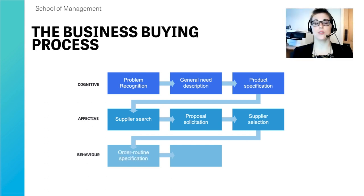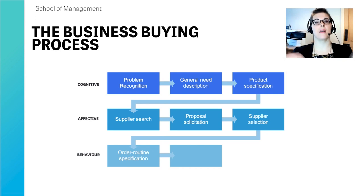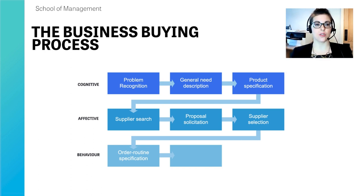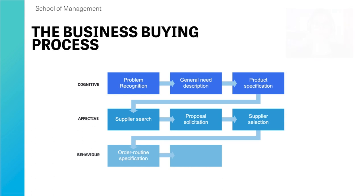Once the bid process is complete, the buying organization selects a supplier and creates an order routine specification. For something like a bridge, you may only order it once or twice in a generation, whereas railway sleepers may need replacing repeatedly. The organization works out how often they'll need to buy and puts in place a process for creating a straight rebuy situation, as it's in everyone's interest to reduce time, resources, and consideration of alternatives.